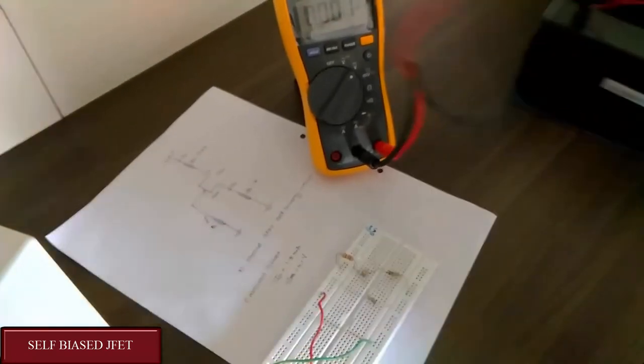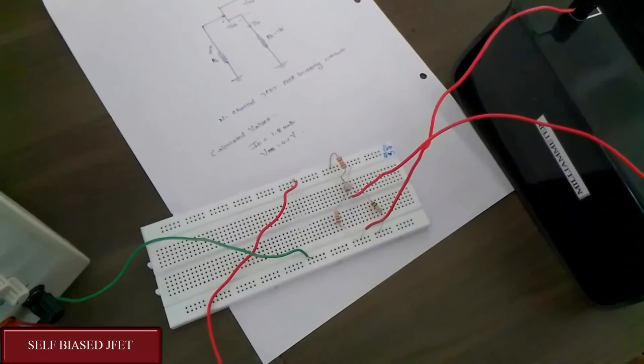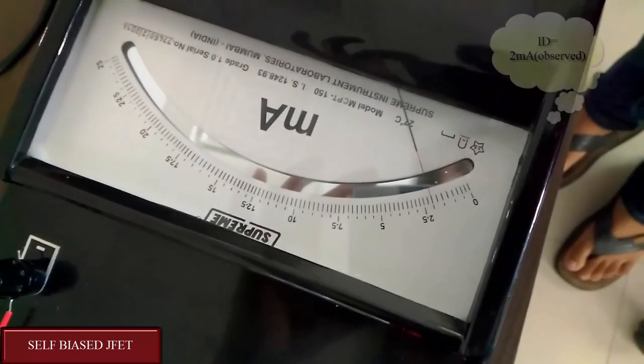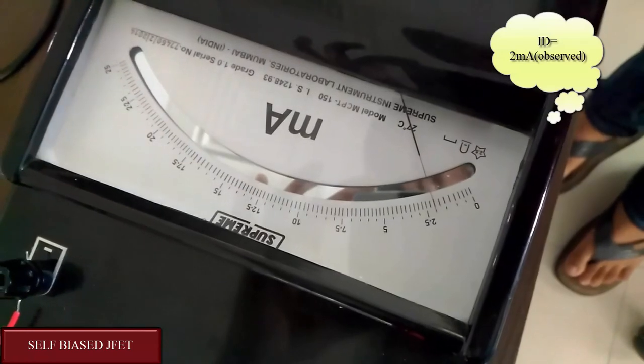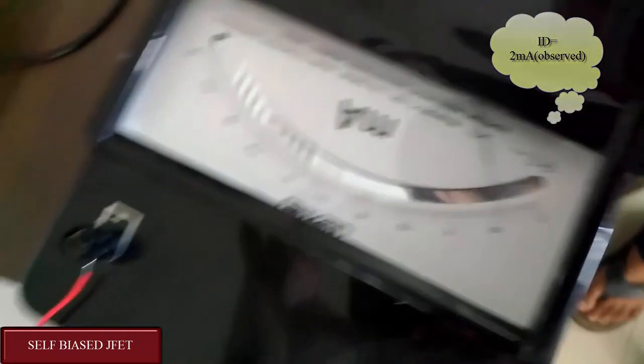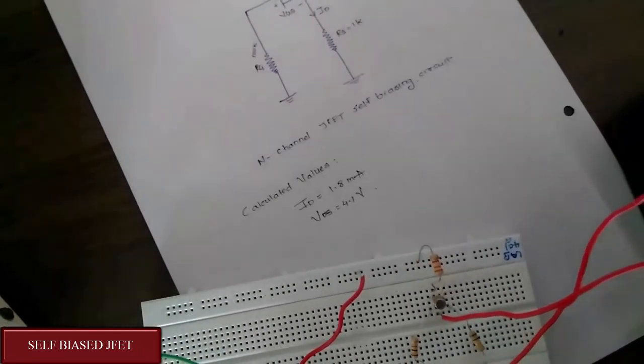The calculated ID value was 1.8mA. That's it for the self-biasing circuit. Thanks.